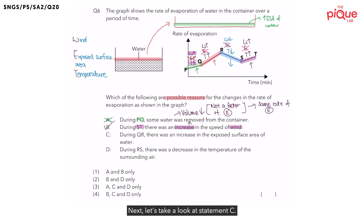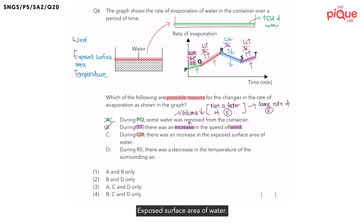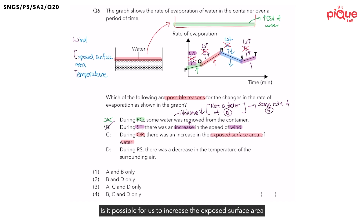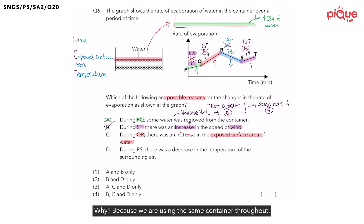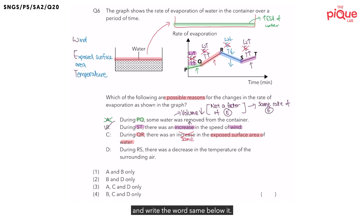Next, statement C: during QR, there was an increase in the exposed surface area of water. Is it possible to increase the exposed surface area of water for this experiment? Not possible — because we are using the same container throughout. So the exposed surface area remains the same. Statement C is wrong.